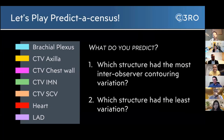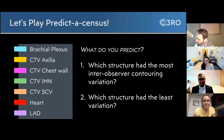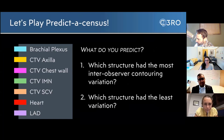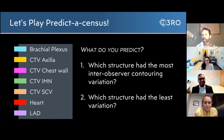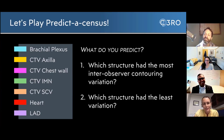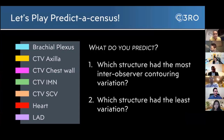I would expect the plexus to have the most inter-observer variation and the heart to have the least. I'm with Rachel about the heart. I think the LAD might actually be even lower. I think the axilla is going to be quite variable based on multiple different atlases people use and lots of different styles — whether you're a VMAT, proton, or 3D person. I'd go with the LAD probably having a lot of variation, and the IMNs clinically as well. The brachial plexus could also be all over the place.